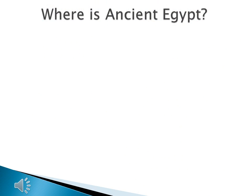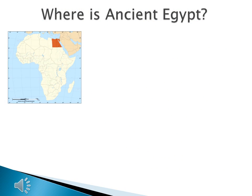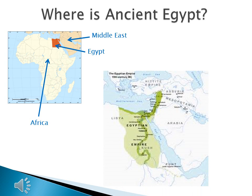Let's make sure that we can locate Egypt before we go any further. Here is a map of Africa, and that shaded country in the top right corner of Africa is modern-day Egypt. You can see that Egypt is not part of the Middle East, but when we bring this other map up, we can also see that things are close together in this part of the world. In fact, we used Egypt as a landmark to locate Mesopotamia.